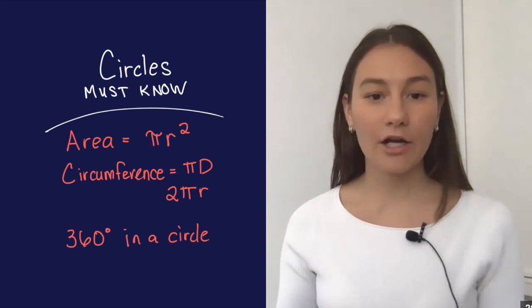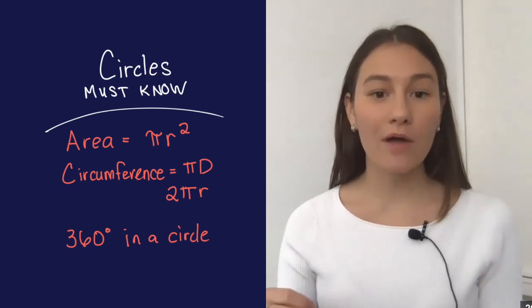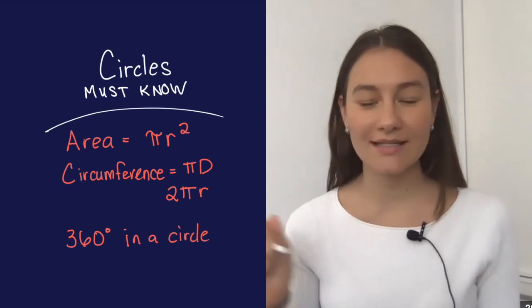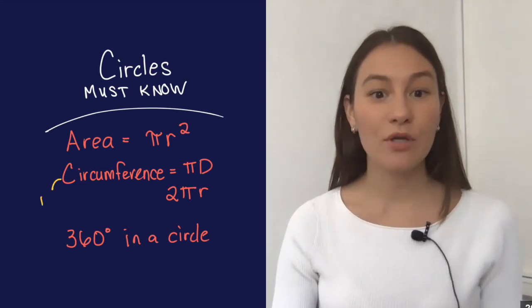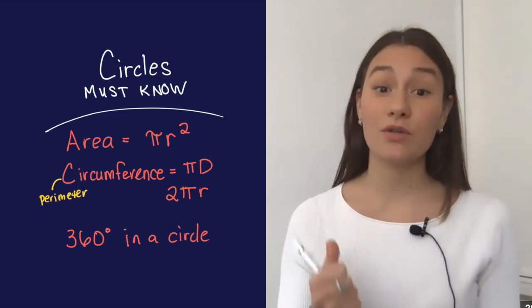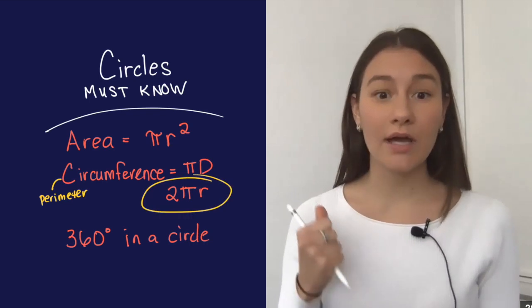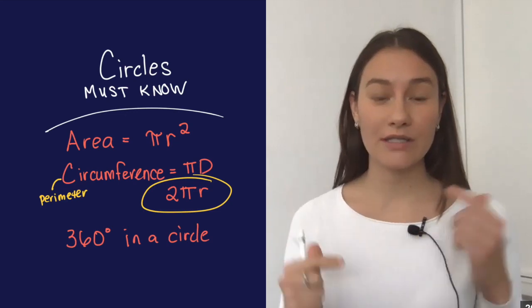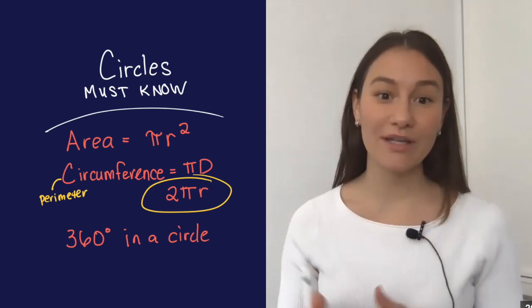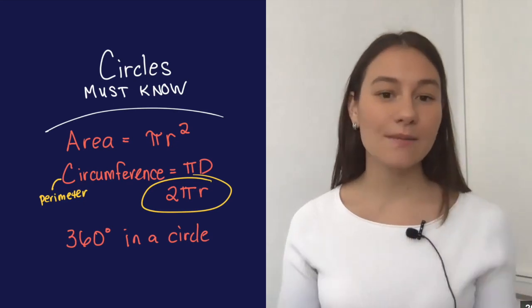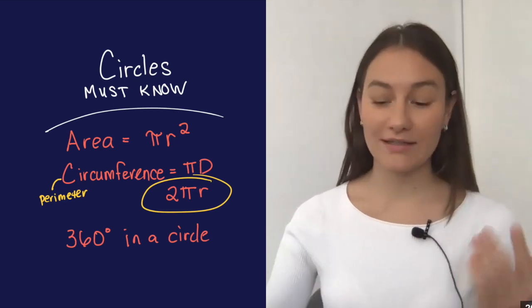Okay, basic stuff. Area: pi r squared. Circumference, the same as your perimeter, right? Just a fancy way of saying perimeter. It's the distance around the circle. You can find that two ways. You can either do pi times diameter or the one that you should get very comfortable with is 2 pi r, 2 times the radius times pi. I say that because a lot of times you're going to be using the two interchangeably and a lot of times it's helpful to have that radius in the formula. Last but not least, your circle is 360 degrees.